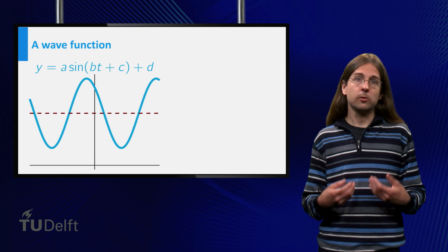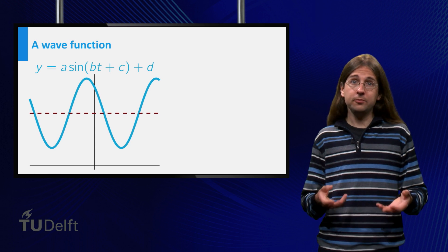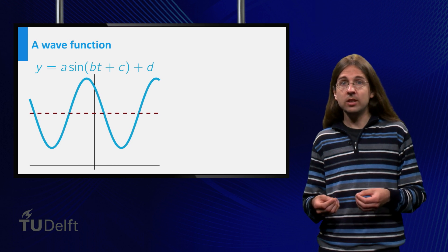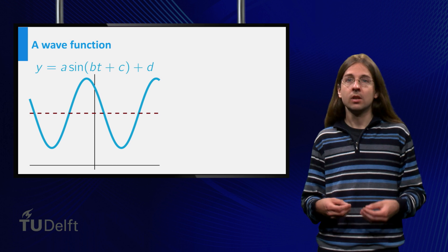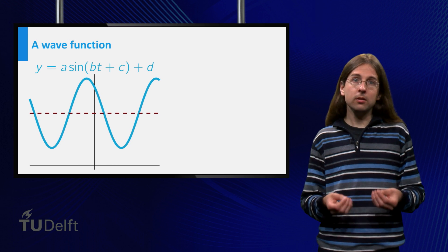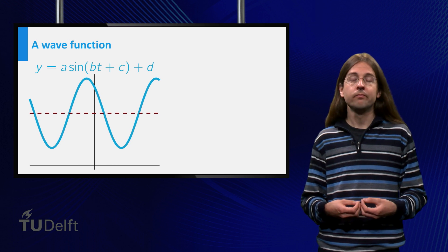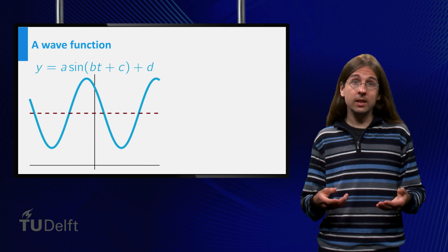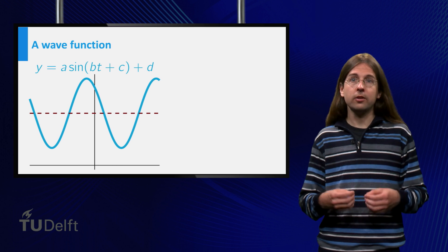The formula for these functions has the form f equals a times the sin of bt plus c plus d, where we traditionally think of the variable t as time. The values a and b correspond to scaling in the vertical and horizontal directions.